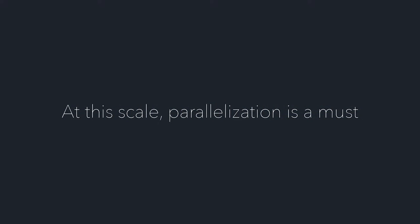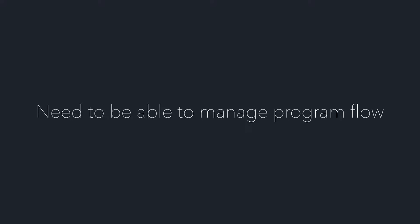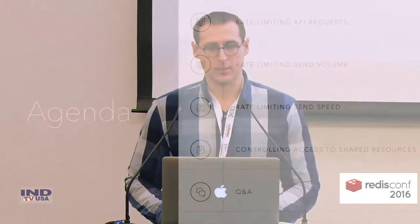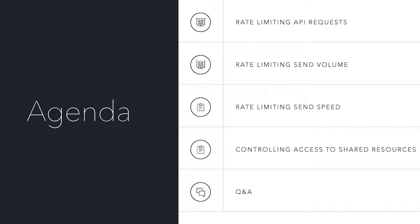At this scale, we have to parallelize everything that we do. But in a distributed setup, we still need the ability to manage program flow. What that ultimately comes down to is having synchronization. So what I want to talk about today is how we control concurrency at Appboy, and I'm going to dive into a couple of different examples.